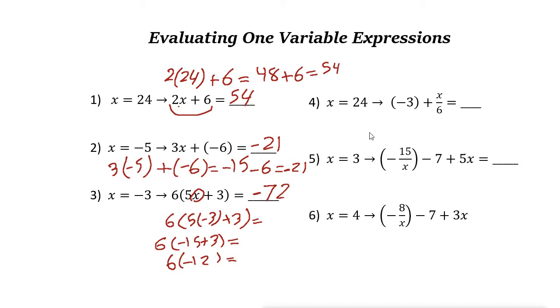Let's take a look at the next example. Again, x is 24. Now we want to solve this one. Negative 3 plus x over 6. x is 24. So 24 over 6, negative 3 plus 24 divided by 6 is 4. Negative 3 plus 4 is 1. So the answer is 1.